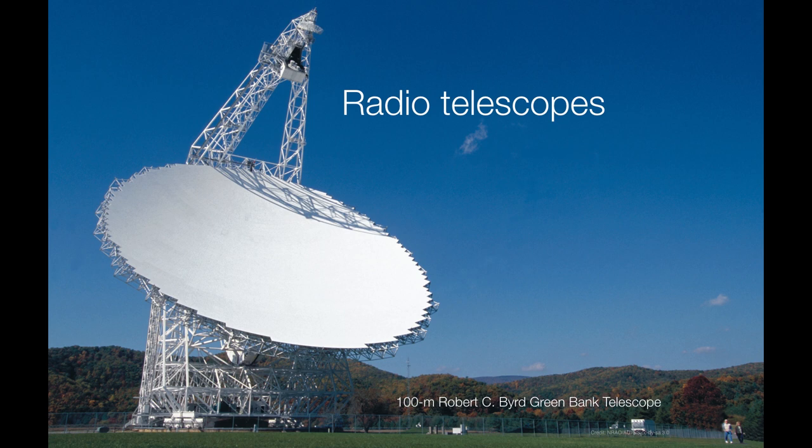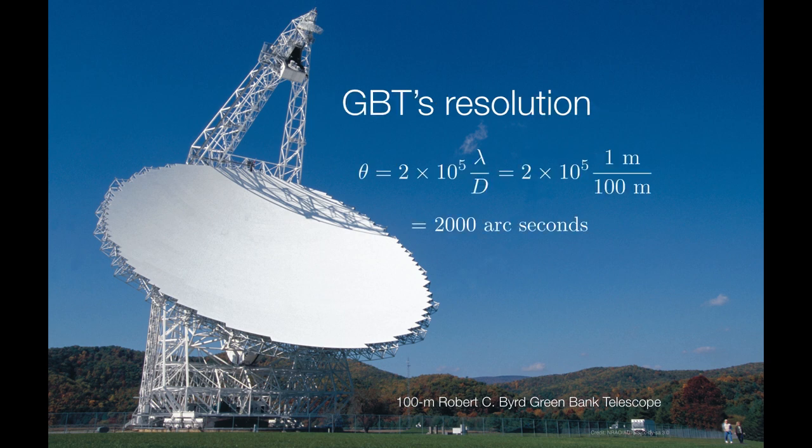The first thing that you notice about this telescope is that it's big. It's very big. It's 100 meters in diameter. But that's necessary because the wavelengths that we're observing with are so long. Remember the relationship between wavelength and angular resolution and the aperture. The longer the wavelength, the lower your angular resolution unless you make your aperture larger. Let's imagine that we're using the Green Bank Telescope to observe at one meter wavelength radio waves. That gives us a resolution of just 2,000 arc seconds. Now, remember for comparison, the human eye is sensitive to approximately 20 arc seconds. So, this is a considerably lower angular resolution.